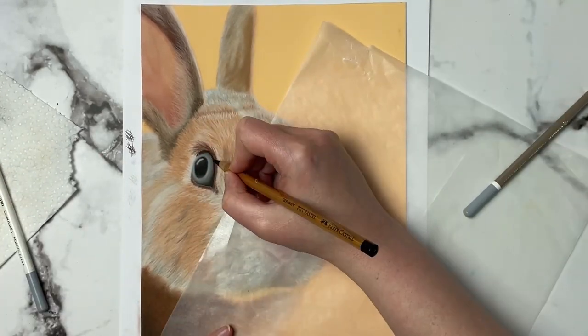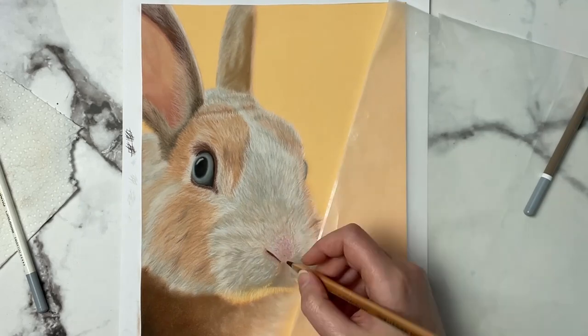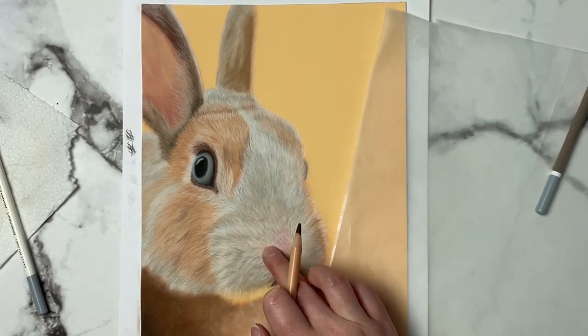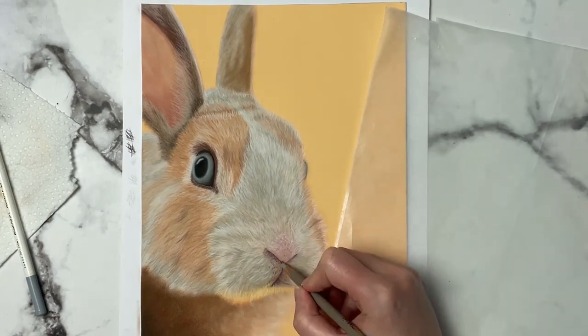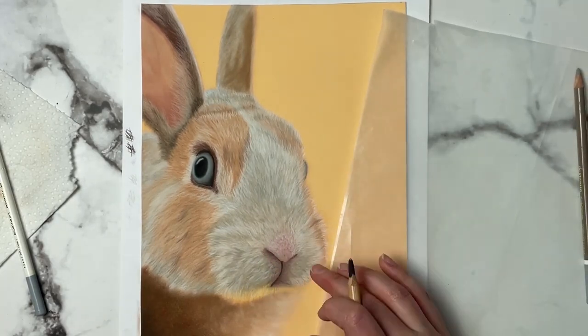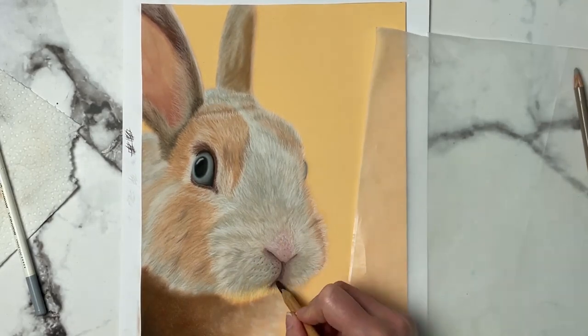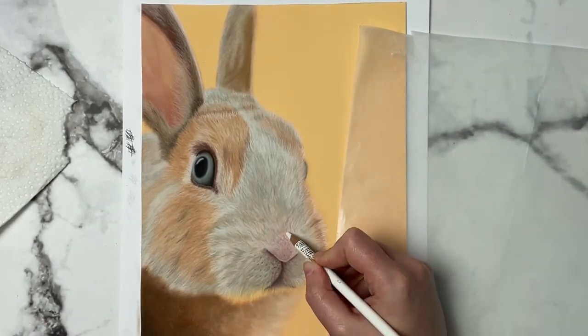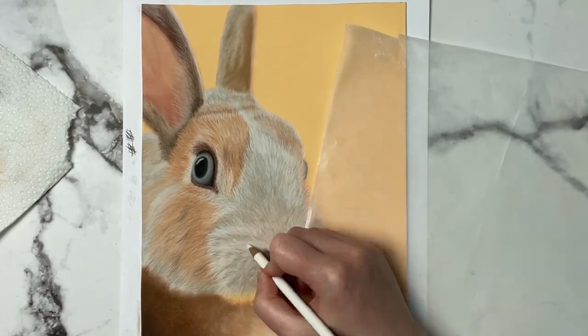And then the very beginning of the whiskers I tend to take my finger and just sort of blend those into the hairs a little bit. Because you don't want this stark line coming out from the fur and going into a whisker, that's going to look really weird. So you want to blend that into the hair a little bit so it looks like it's seamlessly coming out of the little bunny's face.